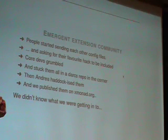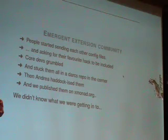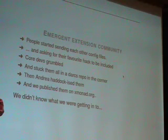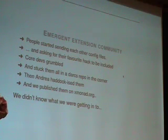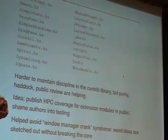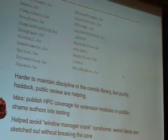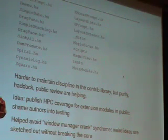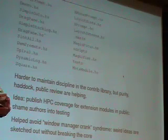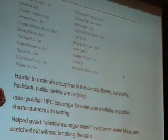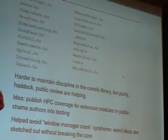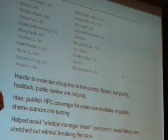We did it in Haskell and we got this extension community — we initially didn't plan for this. People just started sending each other config files, then started asking us to add their cool features into the system. Spencer and I really didn't want to add new features, so we stuck them all in a library. Then someone came along and wrote Haddocks for everything and we started publishing them. Now we have an awful lot of extensions, and this happened because we used a good configuration language. It's harder to maintain discipline in contributed code, but we can enforce the API to be pure, which helps keep quality up. Public review — making sure everyone can see the code and complain about it — is one idea. Duncan had the idea to publish HPC coverage for the test suite for each of the contrib modules publicly, so you can see 0% covered for a module and the author will be shamed into writing tests.